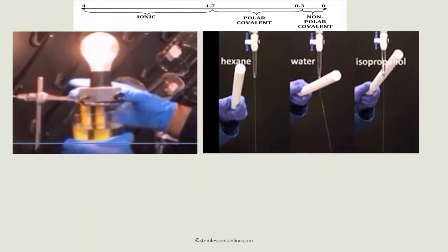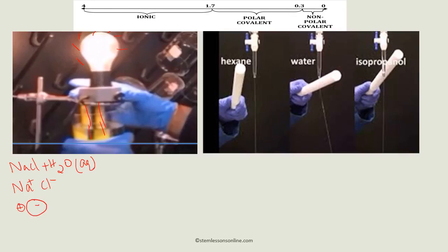In this first experiment, you can see the light bulb glows when a conductivity meter — with probes dipped in a solution of sodium chloride — is tested. Sodium chloride, NaCl, is common salt dissolved in water in aqueous form. When dissolved, it forms sodium ions and chloride ions. Any ionic compound forms a positive ion and a negative ion, and these ions are free to move in solution, which is why it conducts electricity.